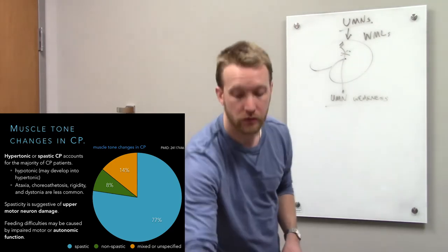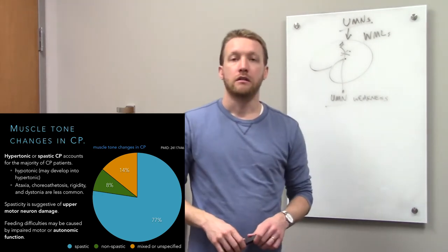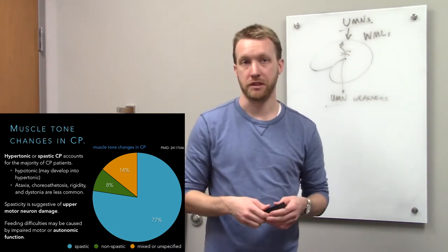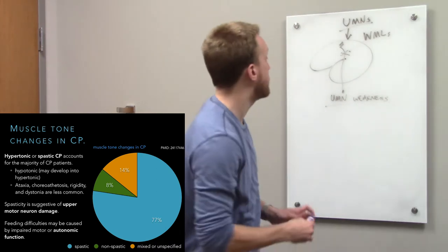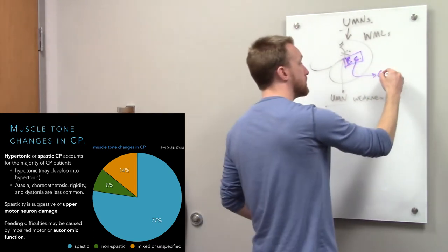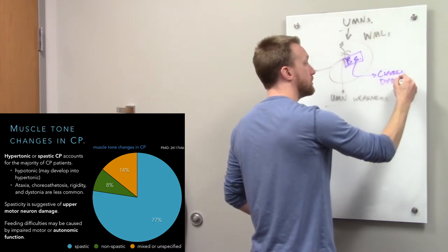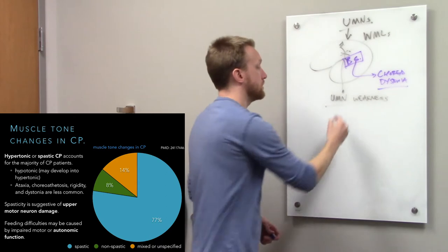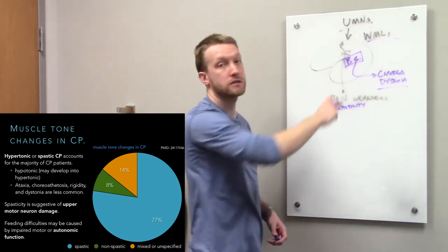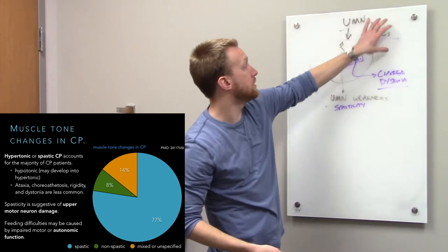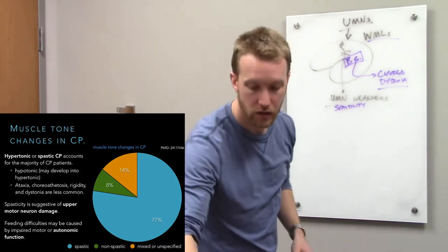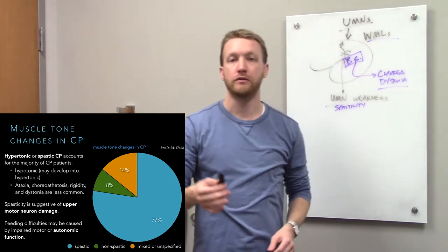Because cerebral palsy is an umbrella term, the type of motor symptoms depends on where damage occurs. Damage to the basal ganglia, for example, may produce chorea or dystonia rather than spasticity. However, since white matter lesions affecting upper motor neurons are far more common than basal ganglia lesions, spasticity is the predominant motor disorder seen.